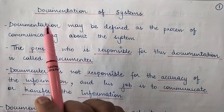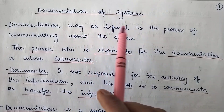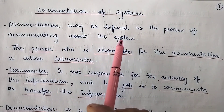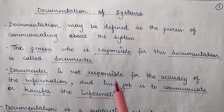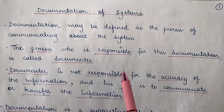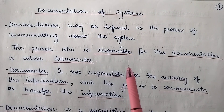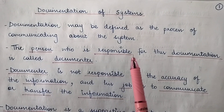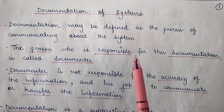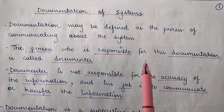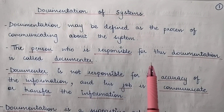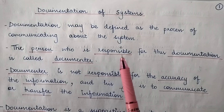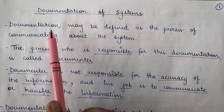Starting with what documentation is — documentation may be defined as the process of communicating about the system. Whatever information is about the system, starting from the very initial phase to the final phase, all that information required at any given point of time by the users, management, team of programmers, or system analysts, even in future, is basically communicated with the help of documentation.